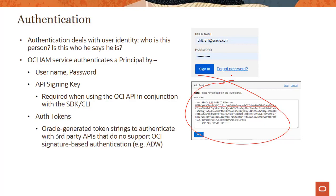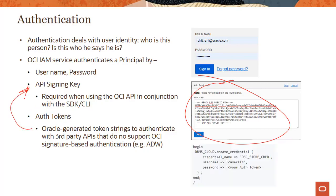The third authentication method is auth tokens. Think of this as a model where third-party APIs that do not support the API signing key approach can use an auth token. A very obvious example is ADW — Autonomous Data Warehouse — which uses auth tokens to authenticate against OCI services.